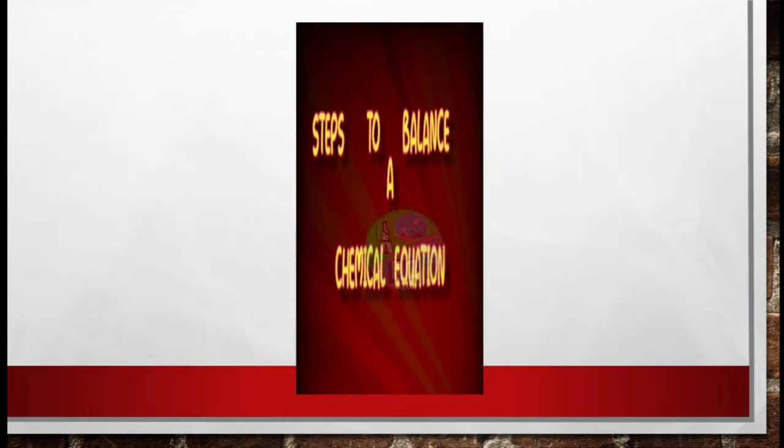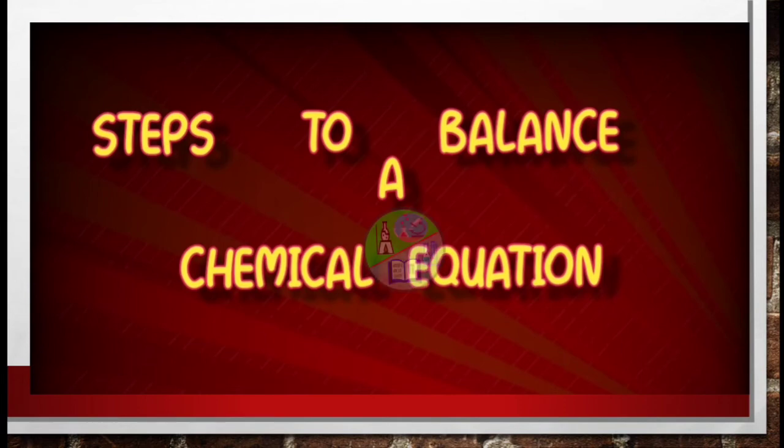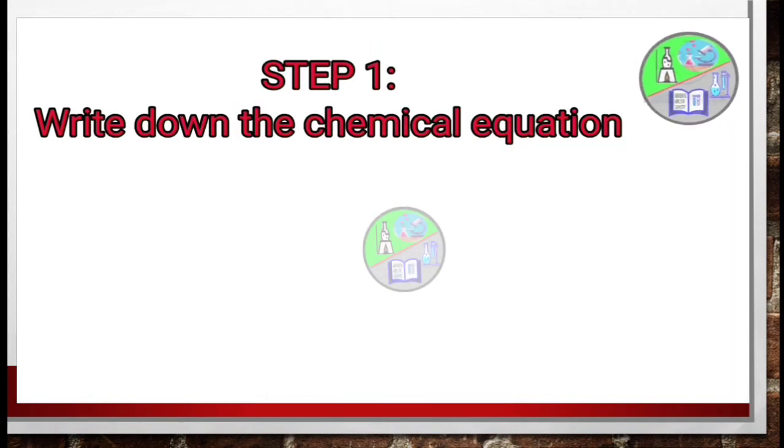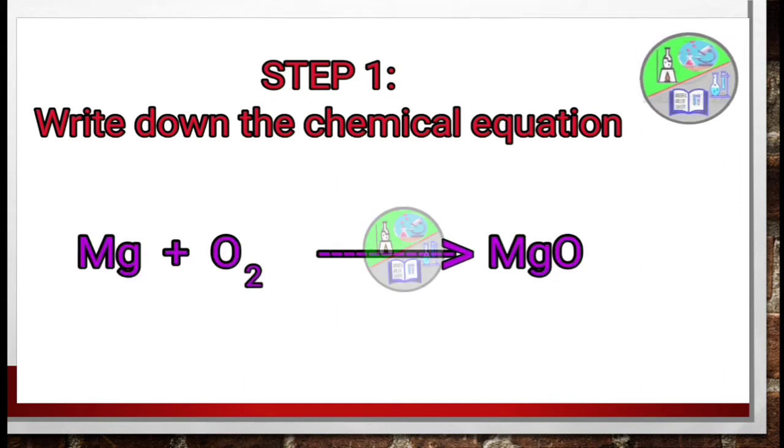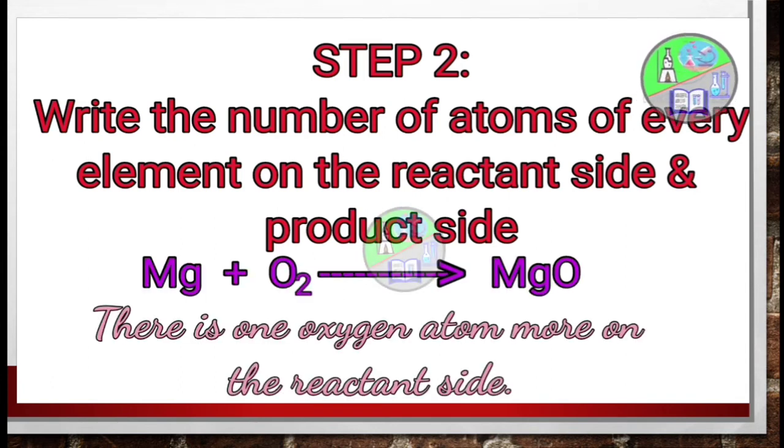Now let's see the steps that we should follow in order to balance a chemical equation. First of all, we will have to write down the chemical equation. For example, Mg plus O2 gives MgO. Second step is write the number of atoms of every element on the reactant and product side. So there is only one oxygen atom which is more on the reactant side.